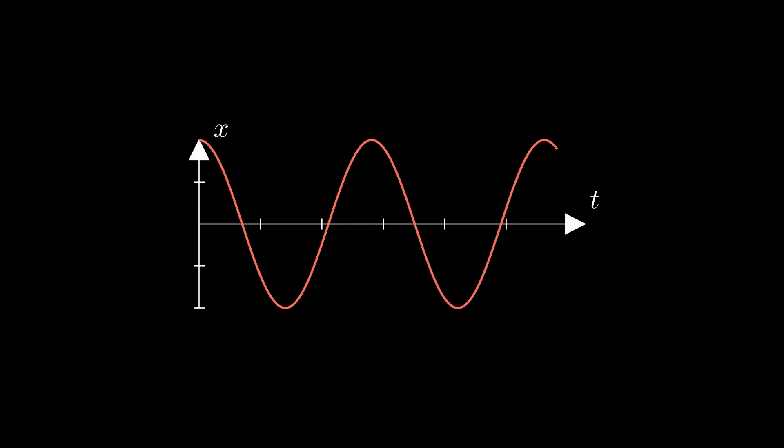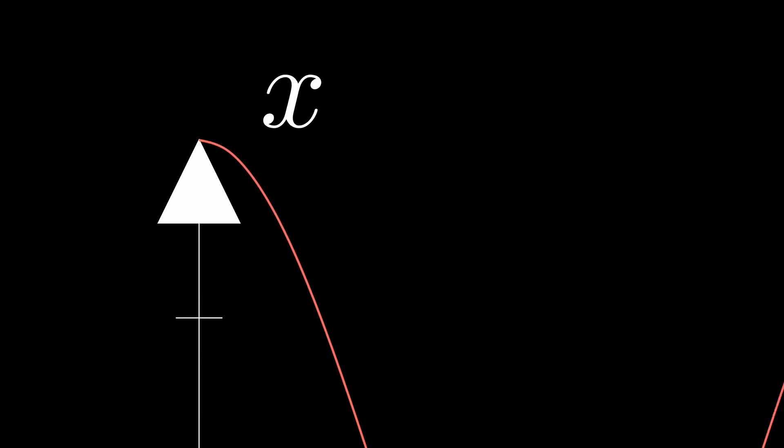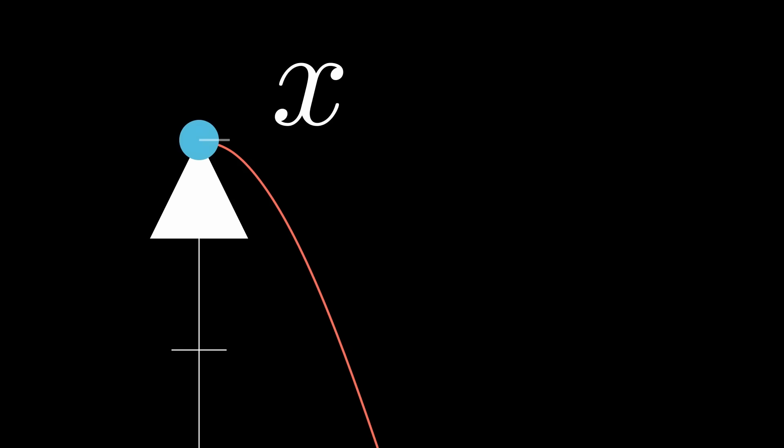We'll use this method to try to approximate the sinusoid curve in the position versus time graph. Remember, the red line here is the exact answer. Here I'm showing the process for the first time step.